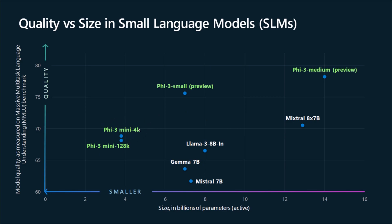For starters, we have Phi-3 Mini. This is a model that has a 4K context window, and then we have a Phi-3 Mini model with a 128K context window, which is incredible to have for a model that is sized at 3.8 billion parameters. Then we have Phi-3 Small, which is a preview model at the moment, and it has basically out-surpassed Mistral, as well as Llama 3 and Gemma 7B models.